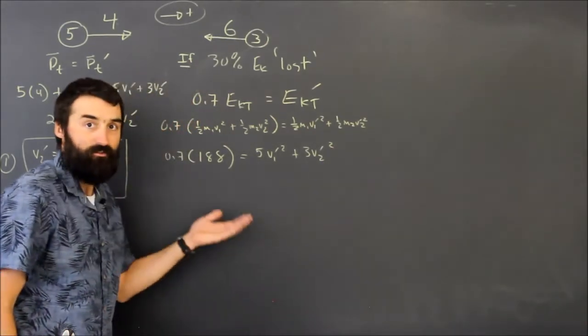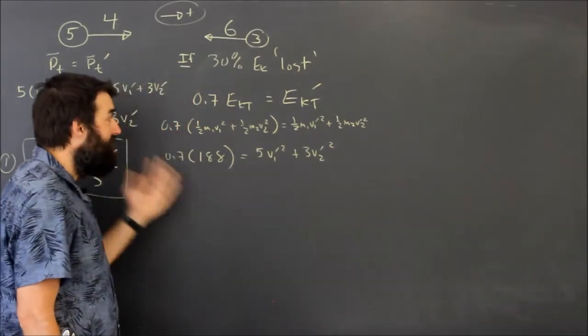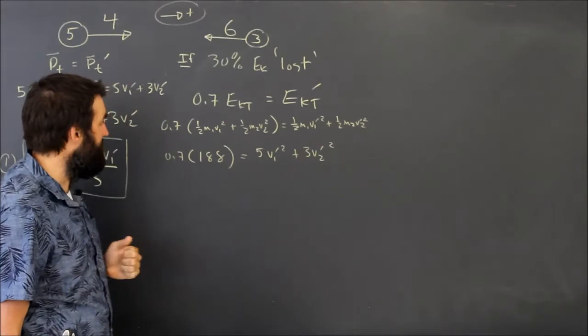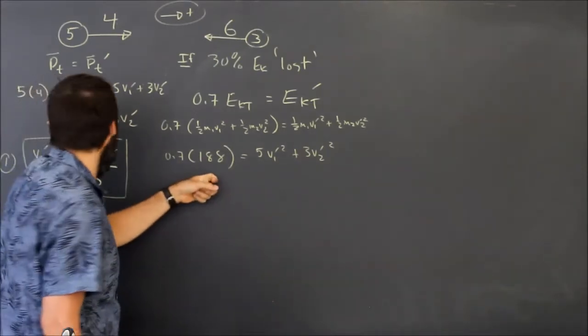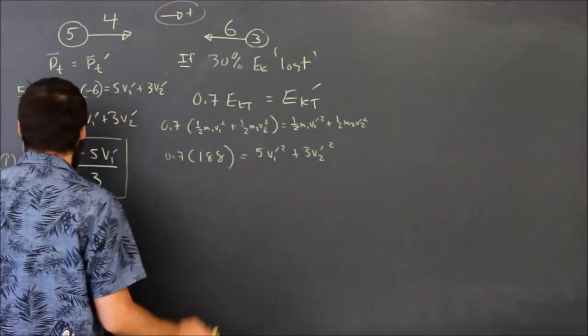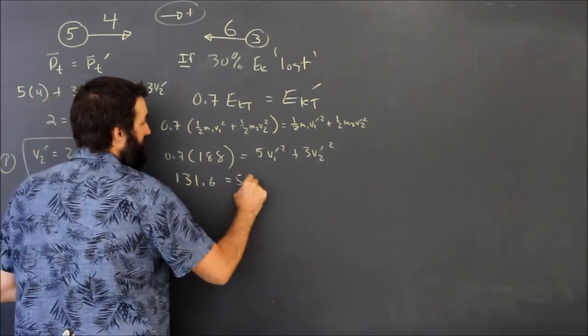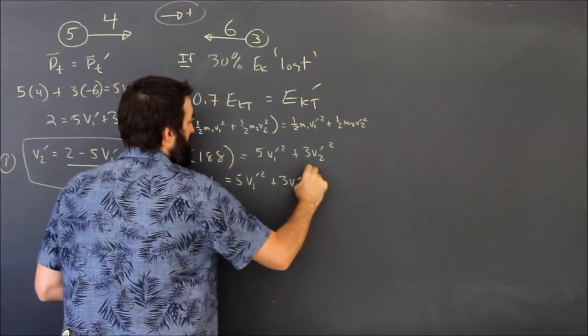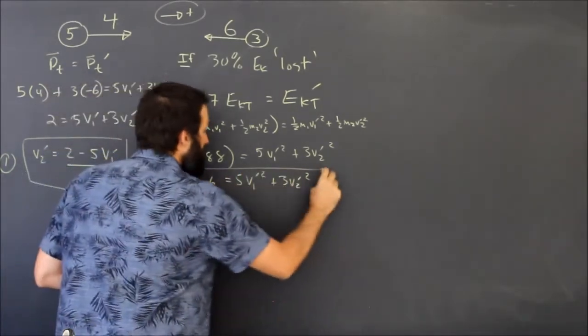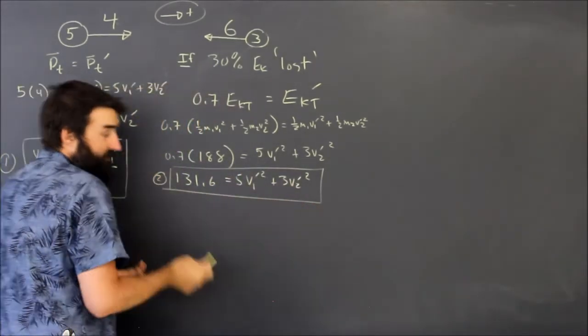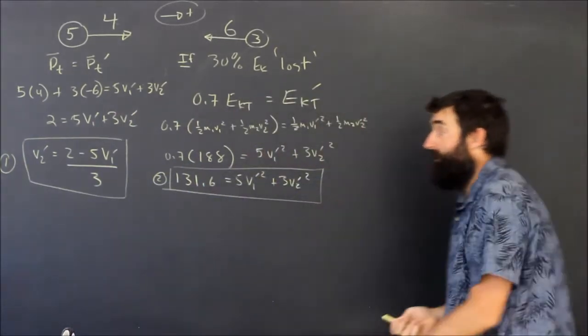This looks a lot like video A and it's essentially the same, except this number is going to be a little bit different. Instead of 188, I have 0.7 times 188, which is 131.6. I'm going to call that equation two.